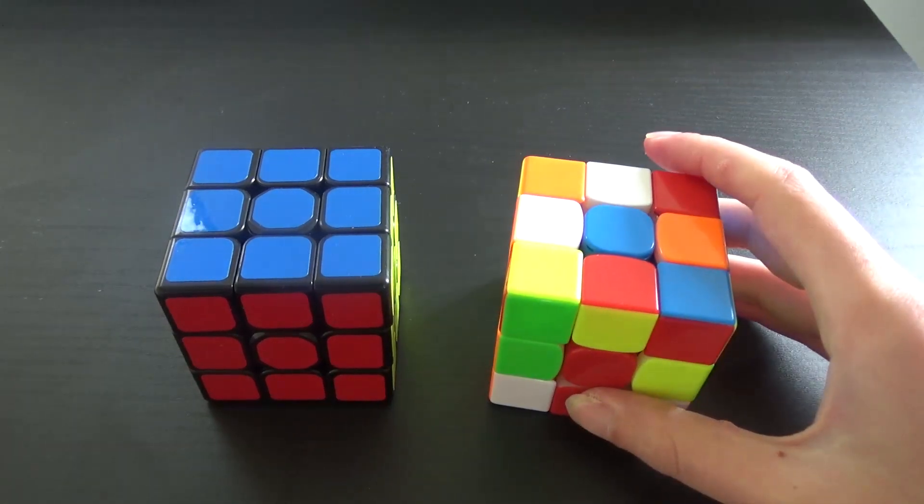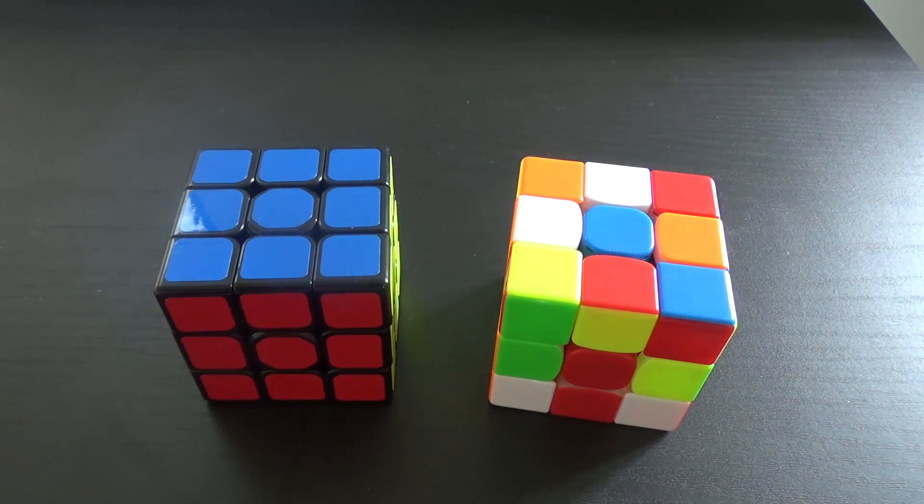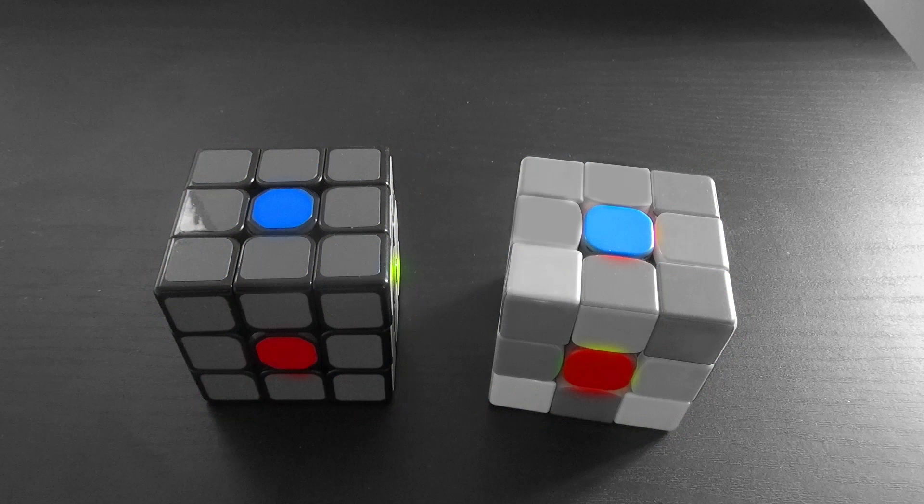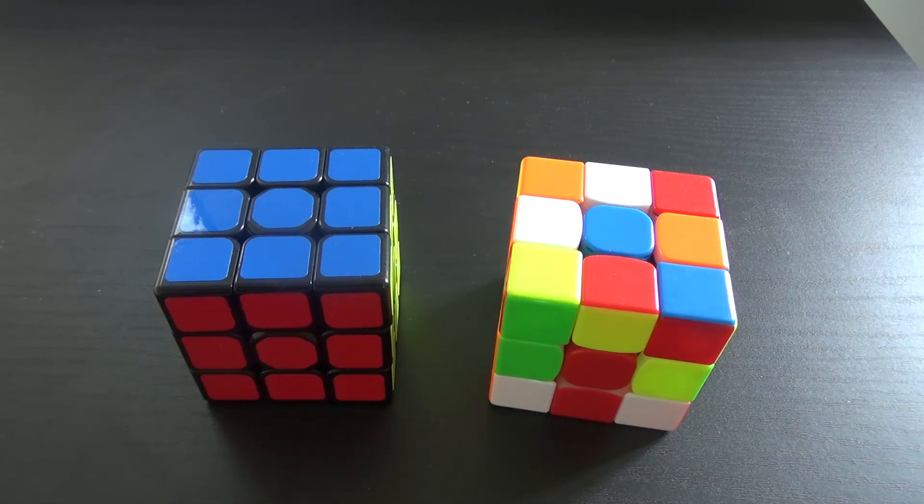Now the first thing you need to know is the cube is split into three piece types: corners, edges, and centers. The centers can't move in relation to each other so they're always in the same place and they decide what color that face is.